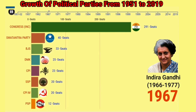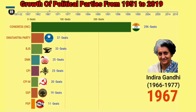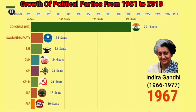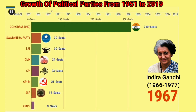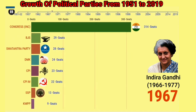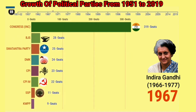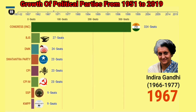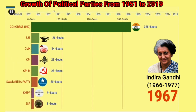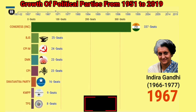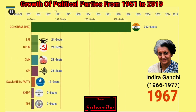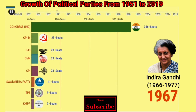Indira Gandhi became the third Prime Minister of India after the death of Lal Bahadur Shastri, and she became the Prime Minister of India from 1966 to 1977.